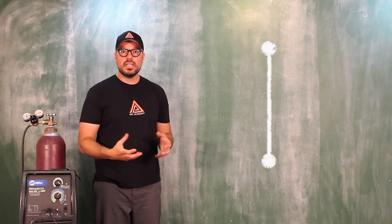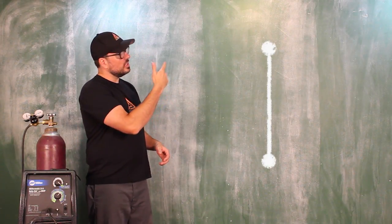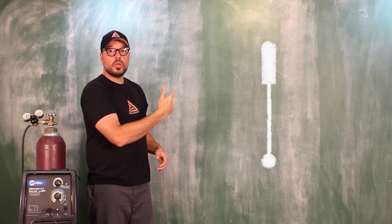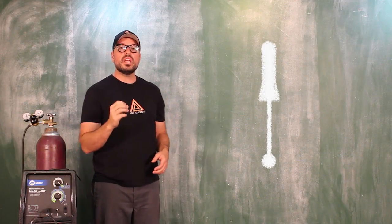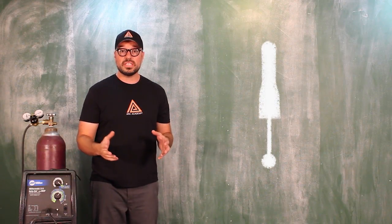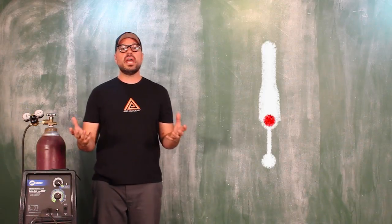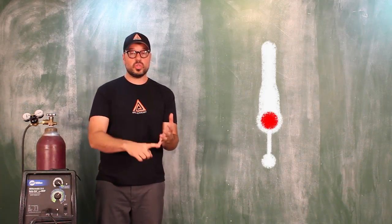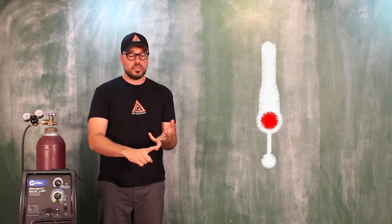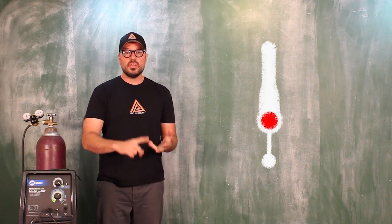Now opposite—you're going through the weld zone, you start slowing down. If you slow down too much or you stop altogether and stay in that area, what happens? Well, you're going to centralize your heat, you're going to put more weight on the material with your filler metal.